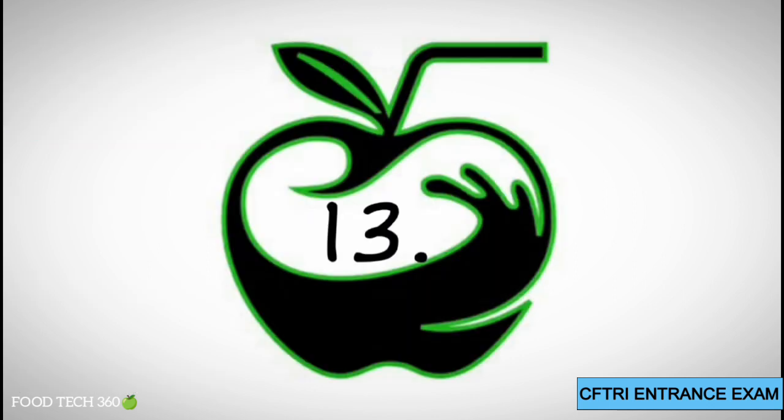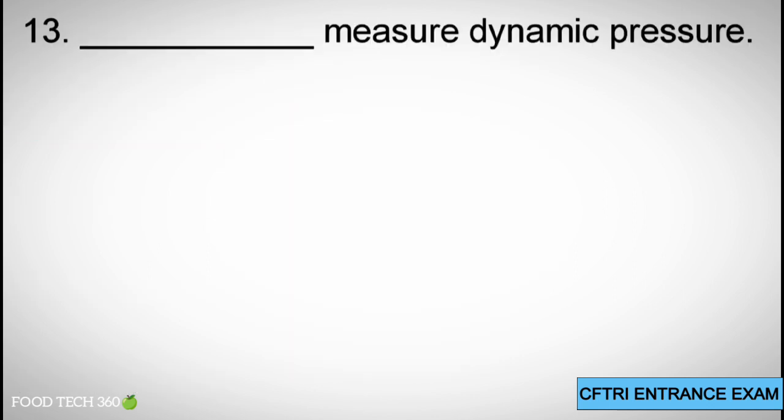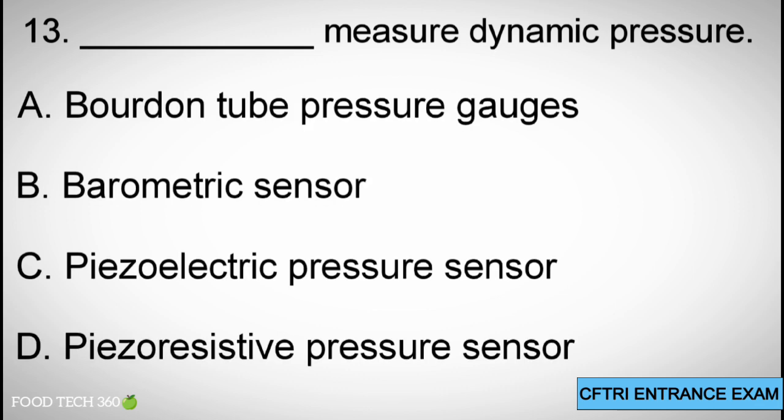Question 13: Which measure dynamic pressure? A. Bourdon tube pressure gauges, B. Barometric sensors, C. Piezoelectric pressure sensor, D. Piezo-resistive pressure sensor. Correct answer: C. Piezoelectric pressure sensor.